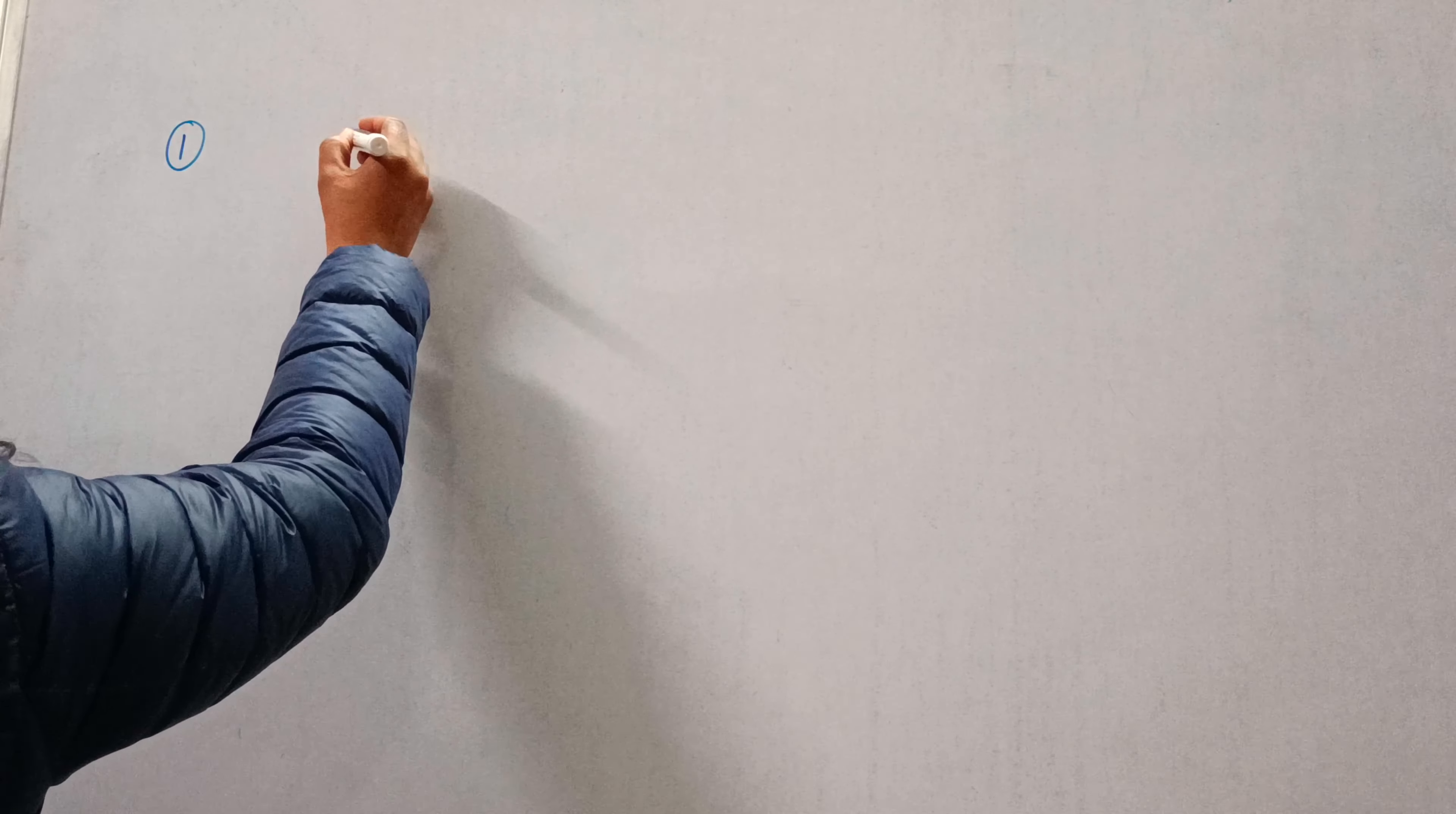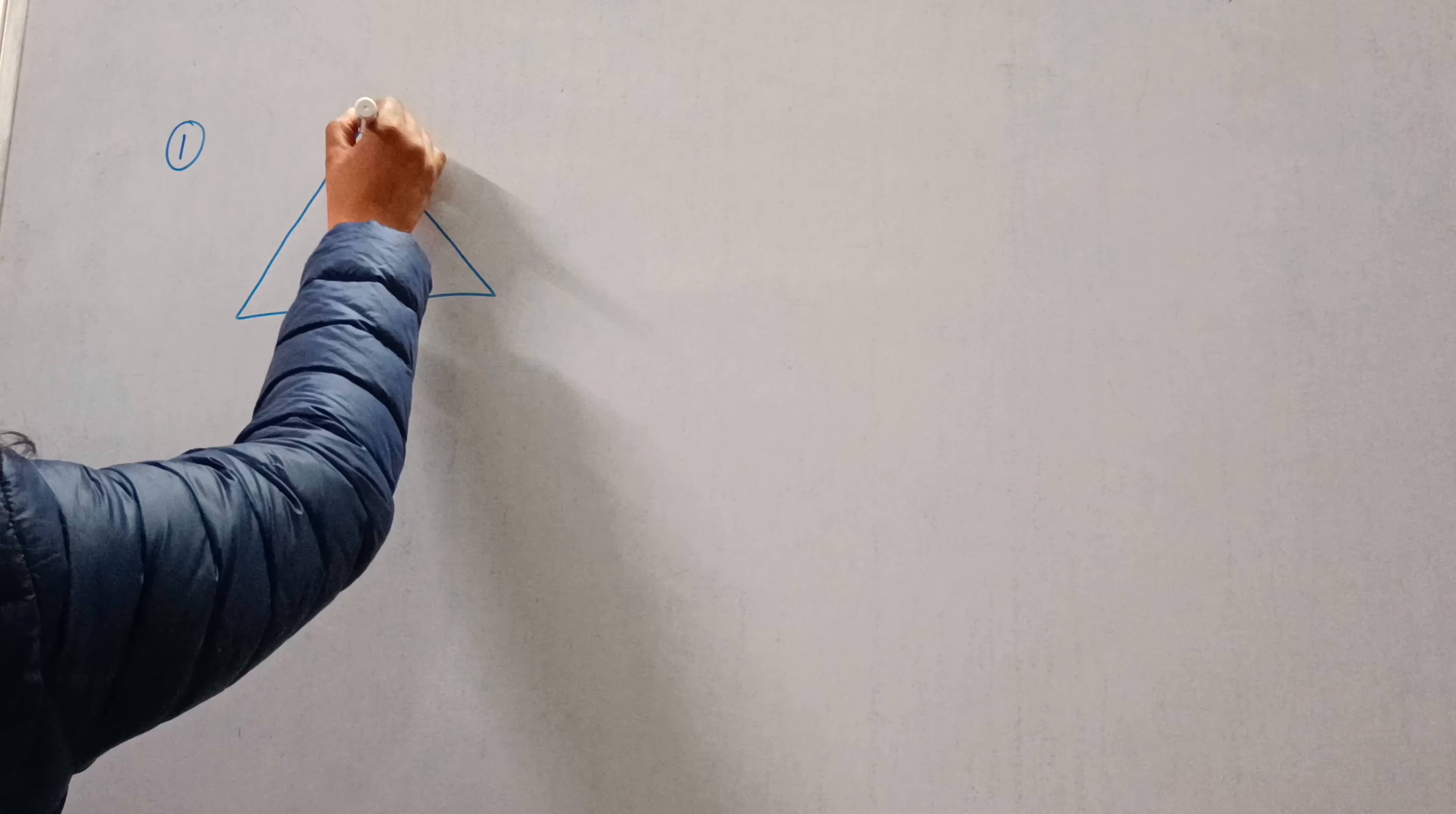Greetings everyone. Today we will do question number 2, question number 1 of exercise 7.2. Question number 1 is: In an isosceles triangle ABC...